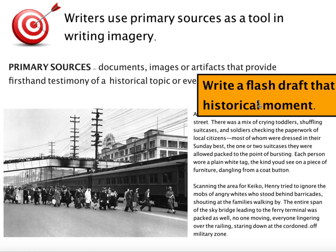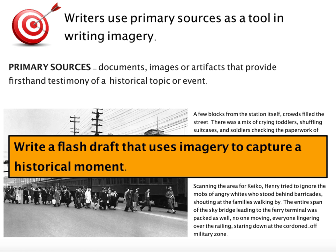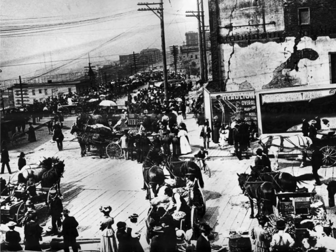Your job today is to write a flash draft that uses imagery to capture a historical moment, and you're going to do that by first finding a historical photograph. My topic is the history of Pike Place Market, so I went and looked for a historical photograph of Pike Place Market from that first year. I couldn't find one from the first day it opened, so I found one from that first year. You might not find a photograph that matches directly with your story, but I bet you can find one that will fit your topic.